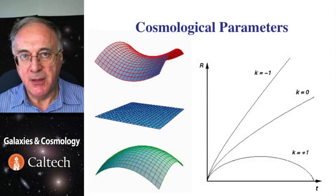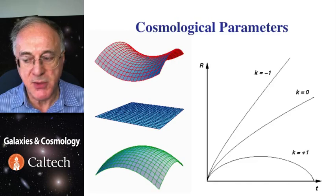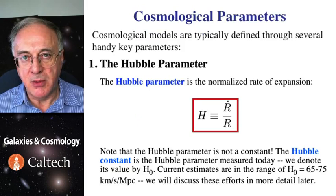Let us now define some of the cosmological parameters which are used to characterize different cosmological models. The first of them is the Hubble constant, or more accurately, Hubble parameter, because it's not constant, it changes in time.